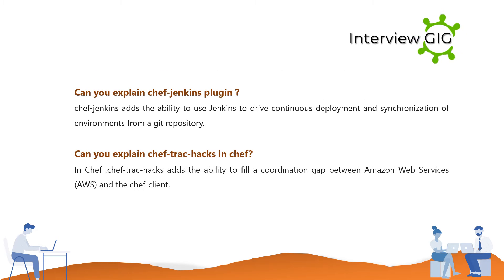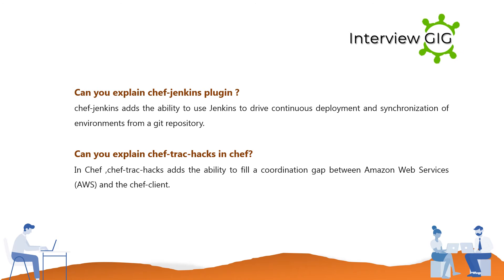Can you explain the Chef Jenkins plugin? Chef Jenkins adds the ability to use Jenkins to drive continuous deployment and synchronization of environments from a Git repository. Can you explain Chef TrackHacks in Chef? Chef TrackHacks adds the ability to fill a coordination gap between Amazon Web Services (AWS) and the Chef client.